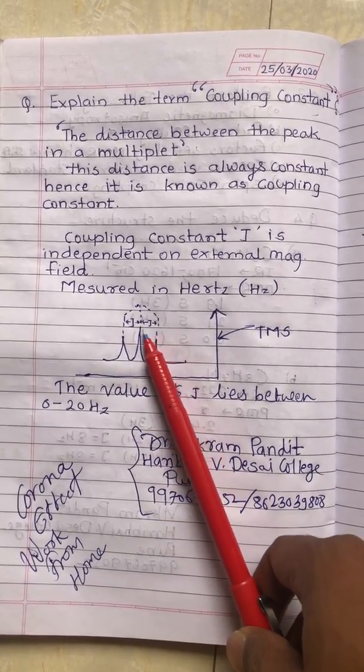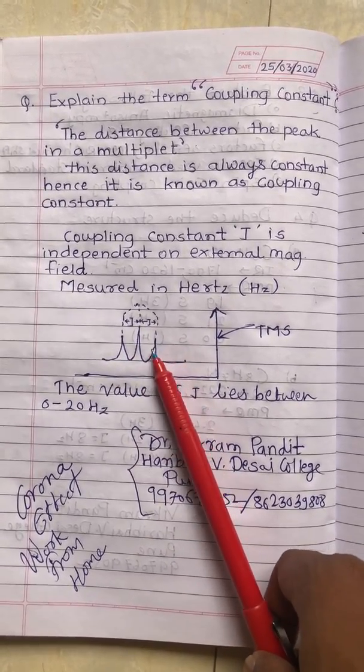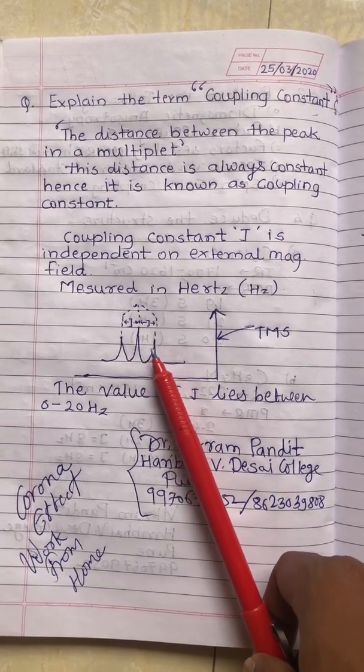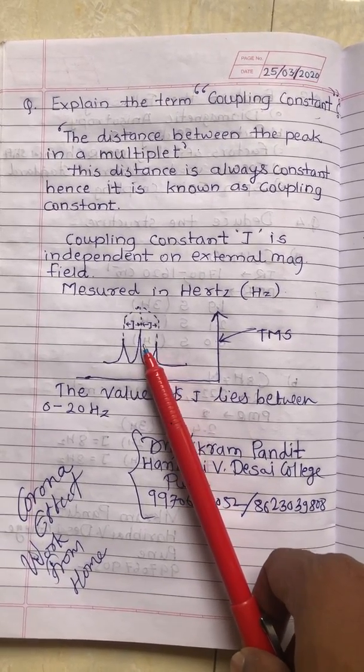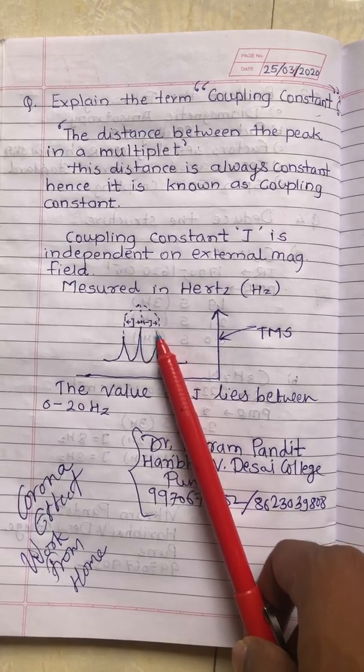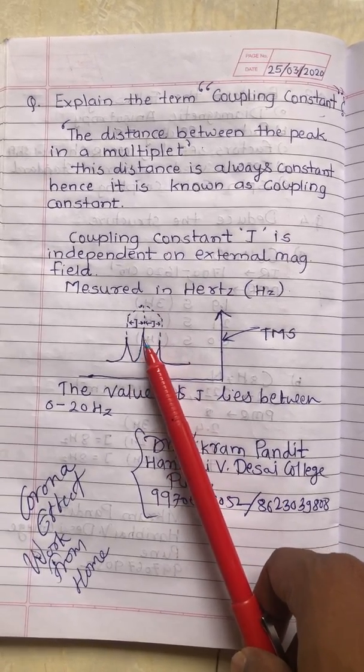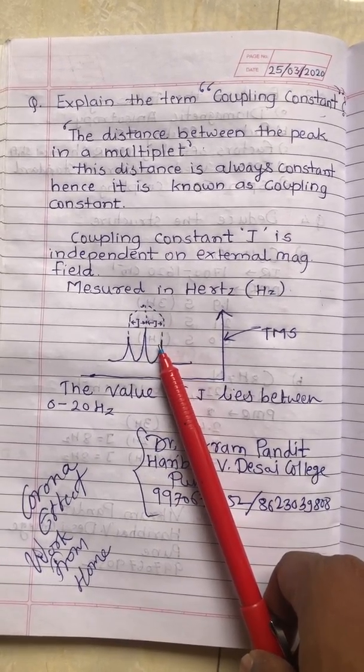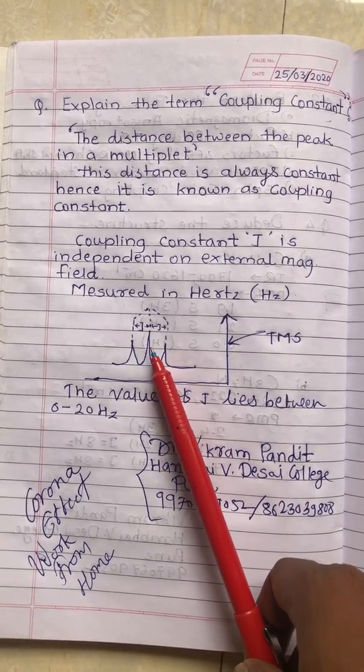This is a triplet - we can consider it as a multiplet. The distance between the peaks in a multiplet is the coupling constant. This distance is always constant, hence it is known as coupling constant.